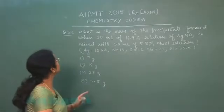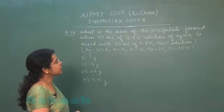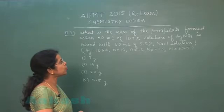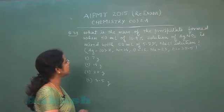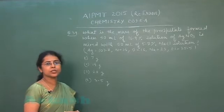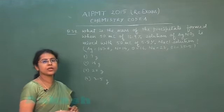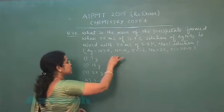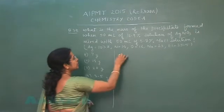Question number 39: What is the mass of the precipitate formed when 50 mL of 16.9% solution of AgNO3 is mixed with 50 mL of 5.8% NaCl solution? Four options are given along with atomic masses of elements. This question is based on stoichiometry, meaning it is based on a chemical reaction.